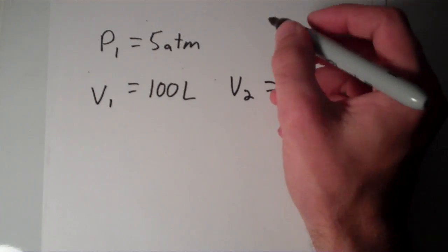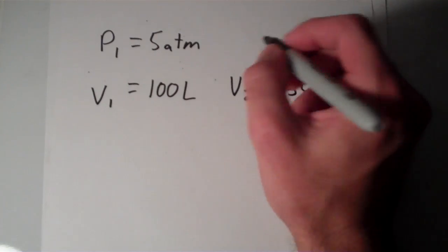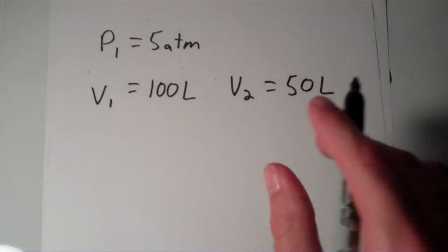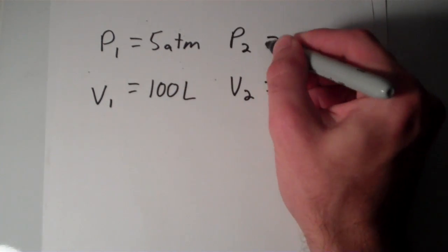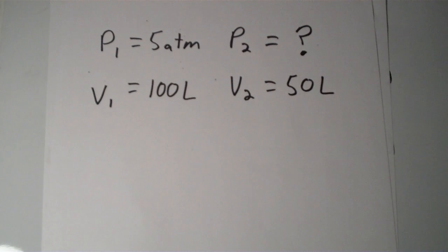So I decrease the volume to 50 liters. Well, if that's the case, what would my pressure be upon compressing it like that? In other words, what is my P₂? That is what I'm trying to figure out.